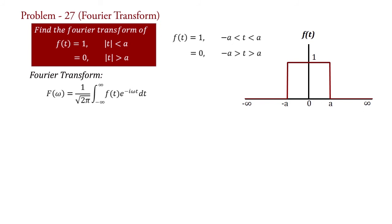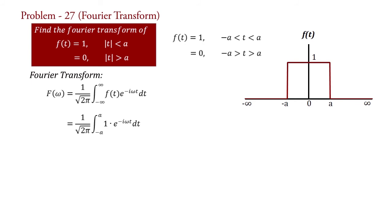Putting these values into the formula, it is clear that the first and third parts vanish. Hence we have F(ω) = 1/√(2π) · ∫ from −a to a of 1 · e^(−iωt) dt.